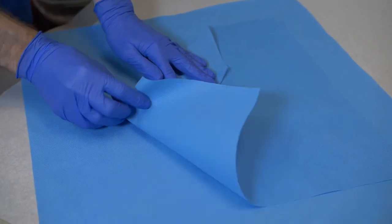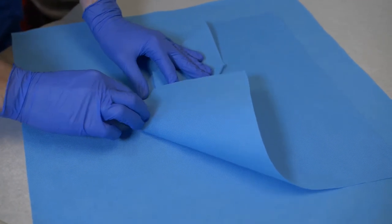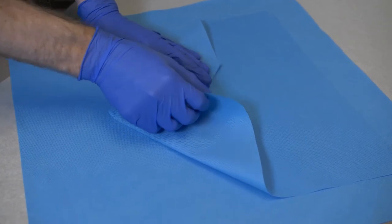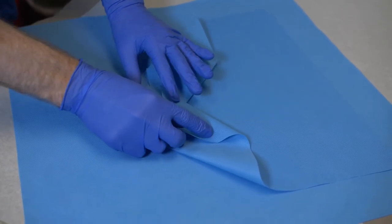Fold one side edge toward the center line and fan fold back to the side and crease it as before. Repeat this step for the other side edge.